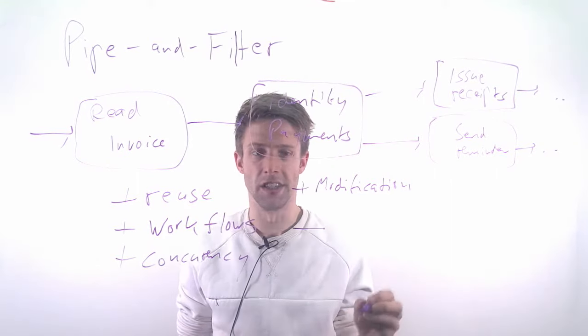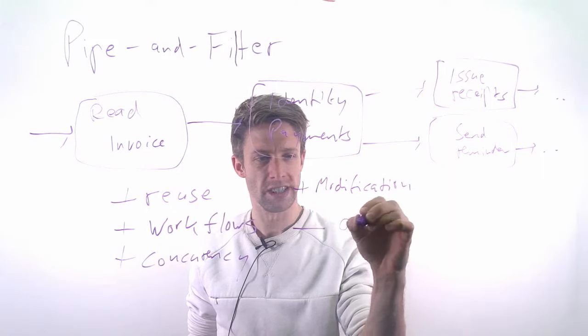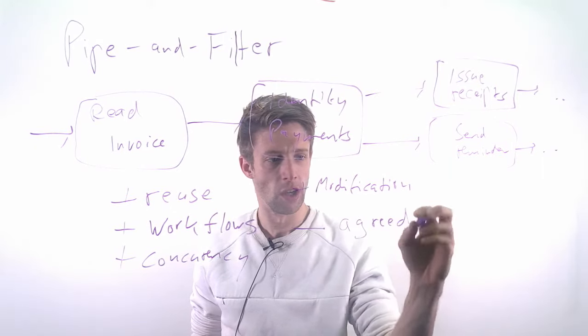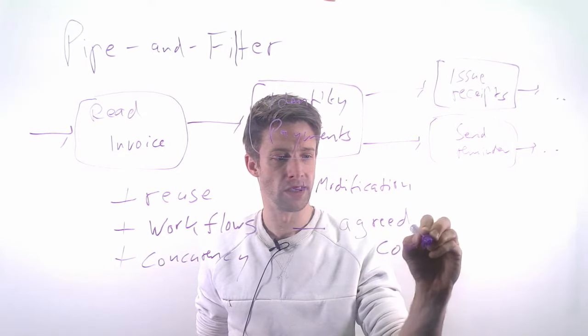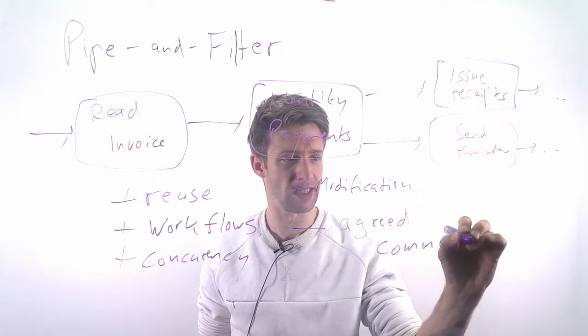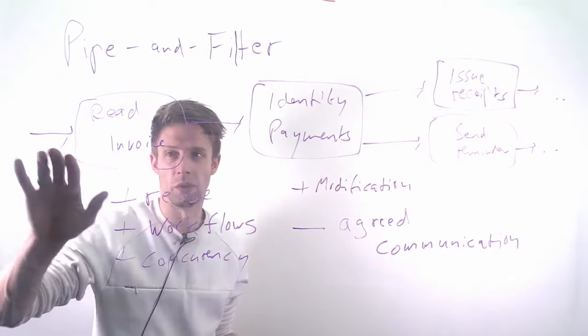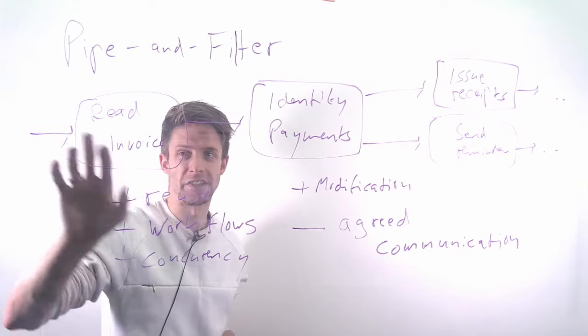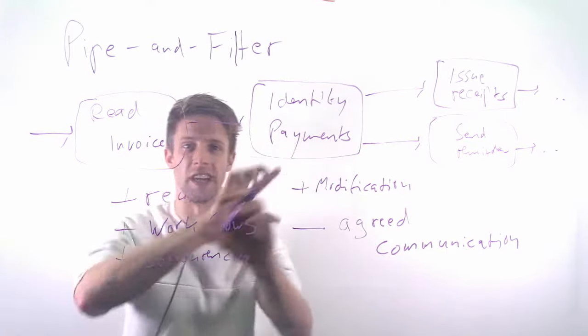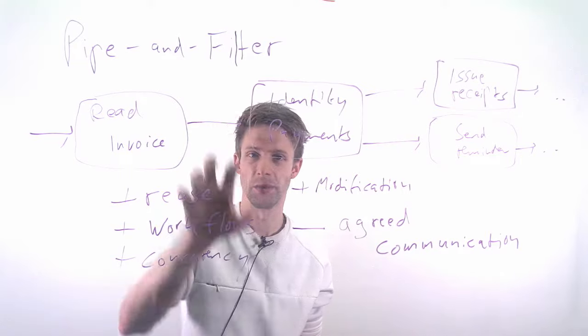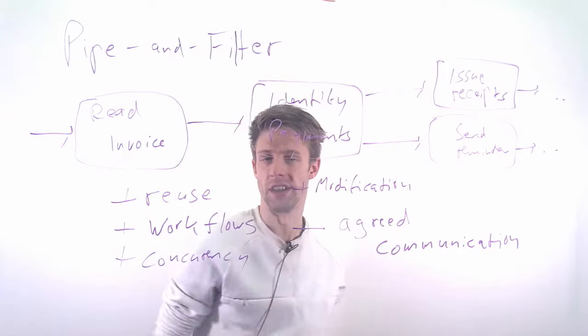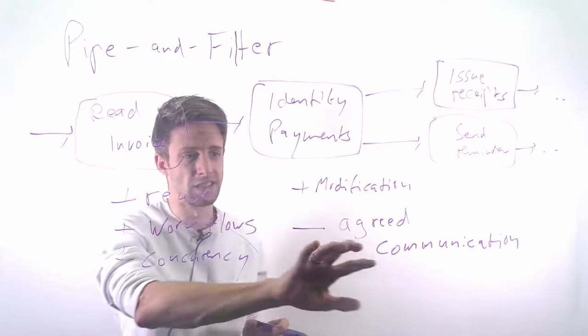The big disadvantage here is to actually agree on how the pipe should look like, so what is the kind of data that flows in and out of it, what is the input, what is the output. Because if you can't agree on that, it's very difficult to have the system in which you can just insert new transformations, reuse them later on, and that's why this can be quite tricky.